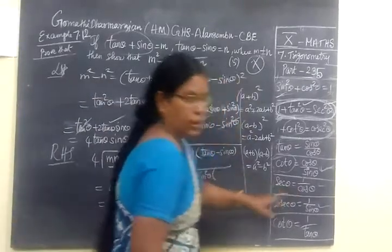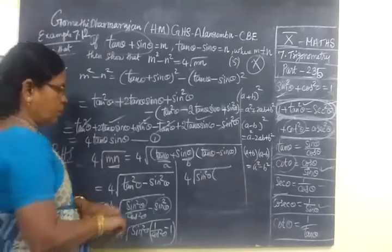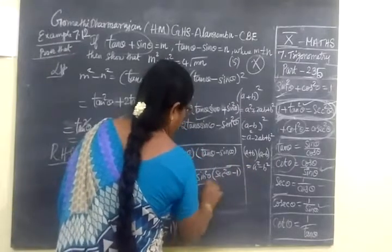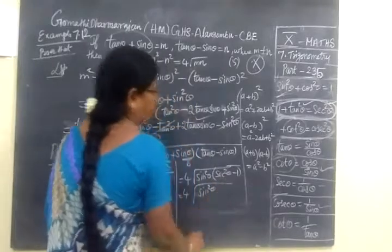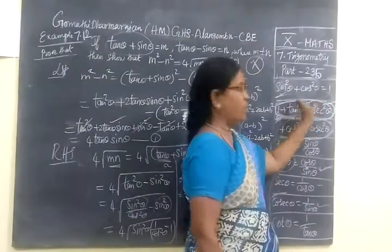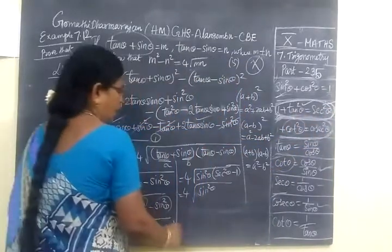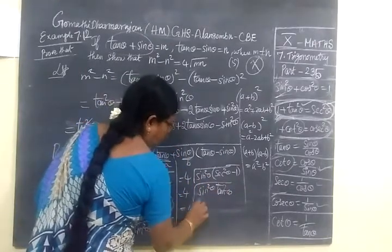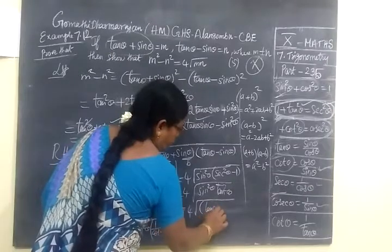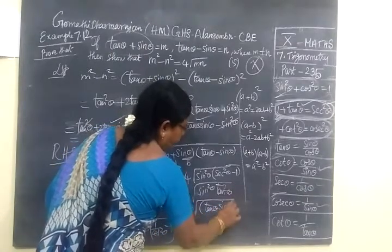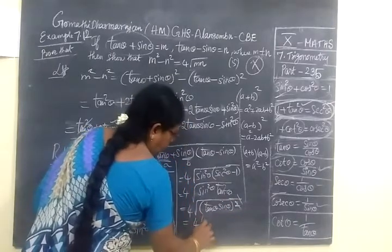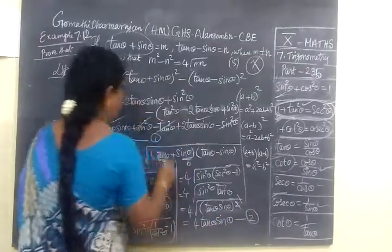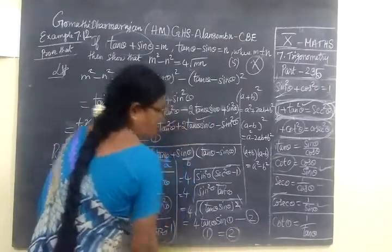So 4 into root of sin square theta, 1 by cos square equal to sec square theta minus 1. So 4 into root of sec square theta minus 1 plus 1, remaining tan square theta. So root tan square, 4 into tan theta.